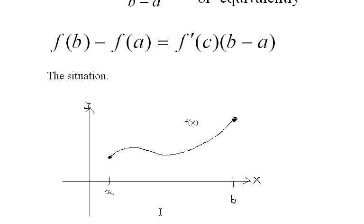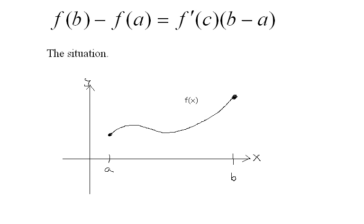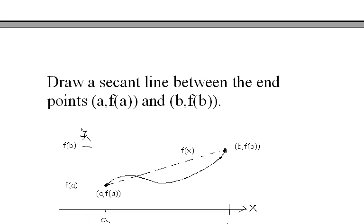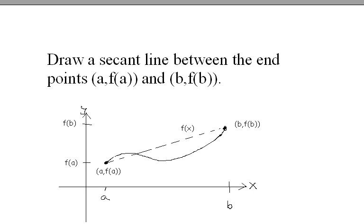And it's certainly differentiable on the open interval (a,b), so we've got the conditions for the Mean Value Theorem set up here. And the next thing we're going to do is draw a secant line between the points a and b, or the points (a, f(a)) and (b, f(b)). So we're going to draw the secant line here.